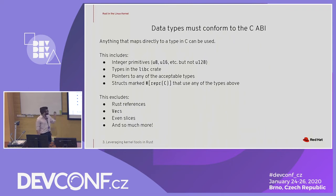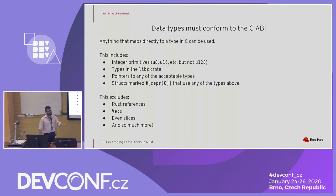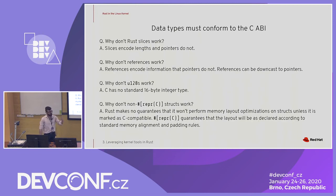Data types really must conform to the C ABI. So we'll have integer primitives that are acceptable, anything in the libc crate, and pointers to any of those acceptable types. We can also mark structs as specifically C ABI compatible. This excludes a lot of things like vectors and slices and many other data types. Slices won't work because they encode length and pointers do not. References also encode additional information that pointers do not. We're not going to be able to use u128s because C does not support those at the C ABI level. Structs must be explicitly marked as C ABI compatible because of memory optimizations Rust will do.